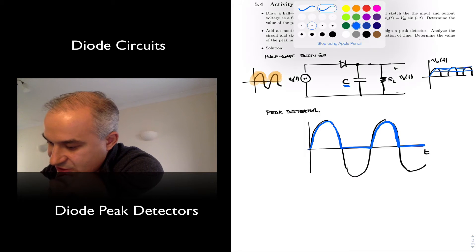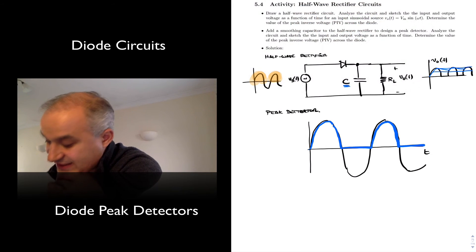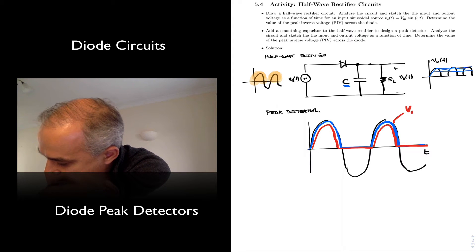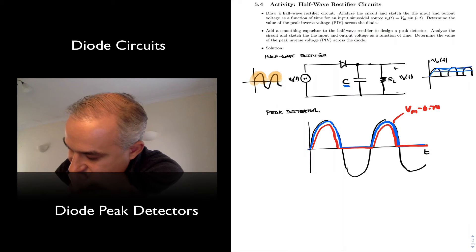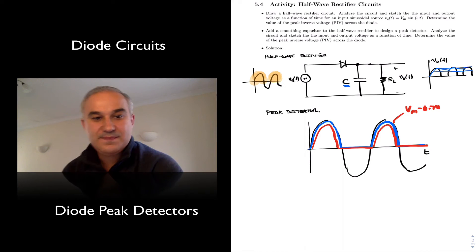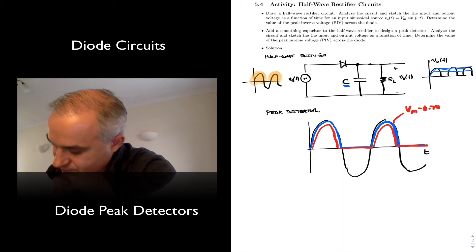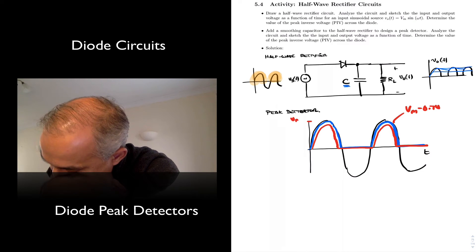Ideally, let's do the ideal. In practice, we are going to get less than that, right? 0.7 volts less. And our peak here is the Vm minus 0.7 volts. Right? Assuming that that's the magnitude of the input voltage, Vm.